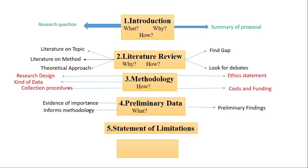After the preliminary data, the next portion is the statement of limitations. In this section you need to present what things are out of your scope — those factors or elements which you are not going to discuss in your particular study. You need to present a list of those limitations so that future researchers can cover them, and present the alternatives that can be used by researchers in the coming days. Finally, you need to present what are the weaknesses of your research proposal.